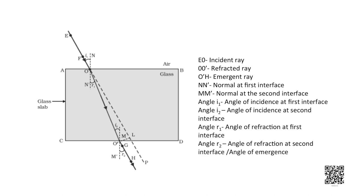This time, the ray is travelling from a denser medium to a rarer one, that is from glass to air. So it bends away from the normal M, M dash. The refracted ray O dash H at the second interface CD is referred to as the emergent ray, since the ray of light emerges out of the glass slab. The angle between the emergent ray and the normal M, M dash is called the angle of emergence and is represented by angle R2. The extent of bending at the opposite parallel faces AB and CD is equal and opposite. This is why the angle of incidence is equal to the angle of emergence.